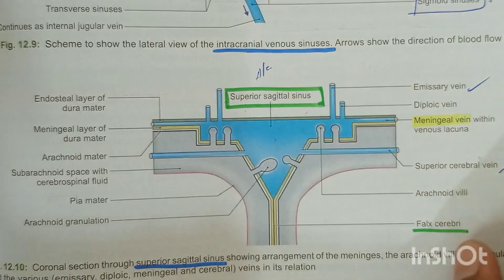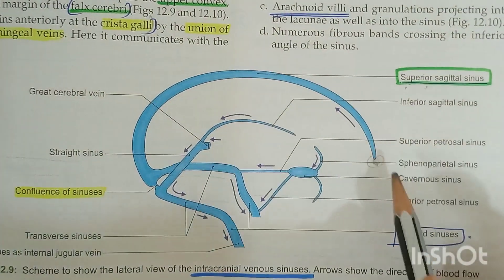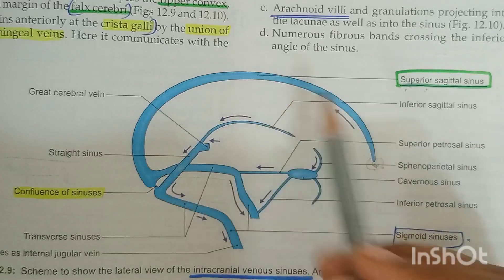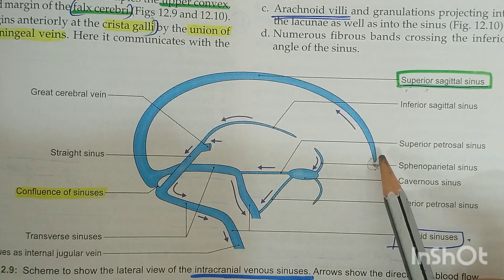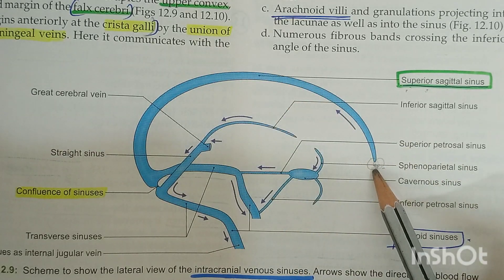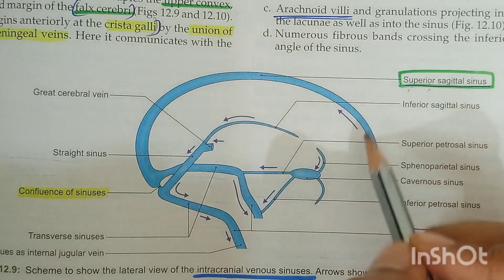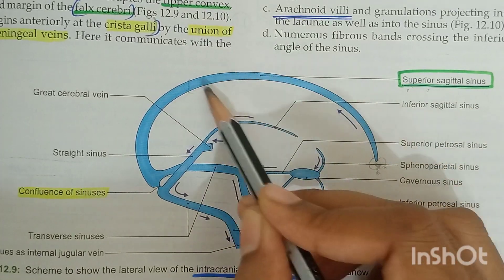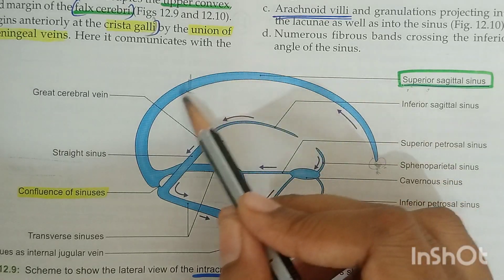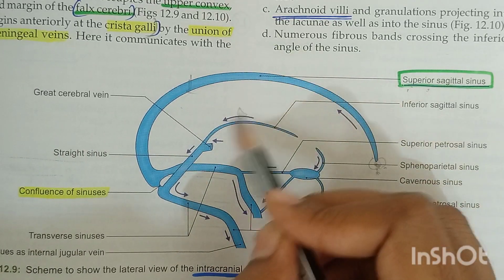Here is a diagram. The superior sagittal sinus begins at the crista galli region anteriorly. From this region it extends backwards, and the size is also almost increasing as the sinus goes backwards. Behind the foramen cecum it extends behind the cranium, becoming progressively larger in size. On cutting cross sections it resembles a triangular shape.